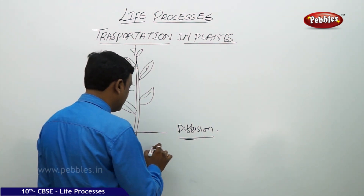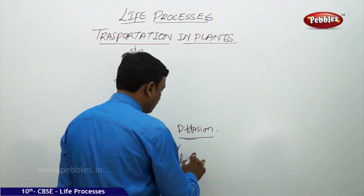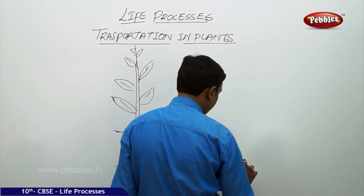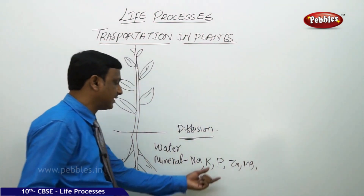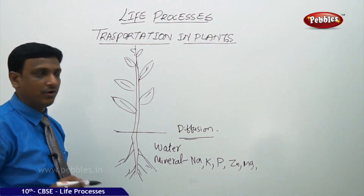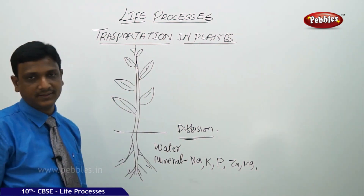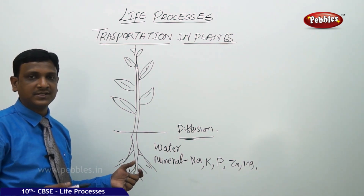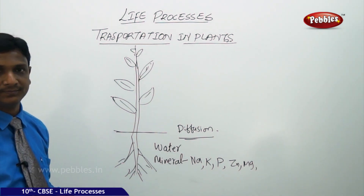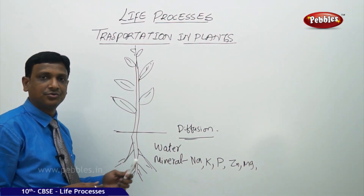What are the basic materials transported in plants? Water is the major one. Along with water, minerals such as sodium, potassium, phosphorus, zinc, and magnesium are required by the plant. These minerals are absorbed along with water, which needs to be transported to very long distances — for example, from the ground to the leaf, the site of photosynthesis. Energy requirements are less in plants compared to animals, so transportation is slow. Plants have tissues to transport water but do not have any pumping organs like the heart.